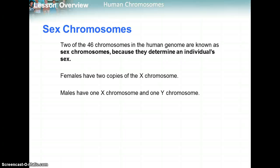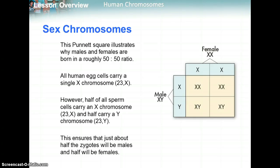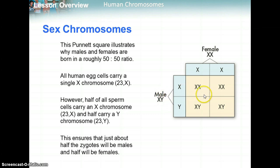Two of the 46 chromosomes in the human genome are your sex chromosomes because they determine your sex. Females have two X chromosomes, and X chromosomes are bigger. Males have one X chromosome and one Y chromosome. You can look at the probability of making males and females almost like a Punnett square problem with a 50-50 ratio. All human eggs carry a single X chromosome, while half of all sperm carry an X and half carry a Y. So it's actually the male that technically determines the sex of the offspring.